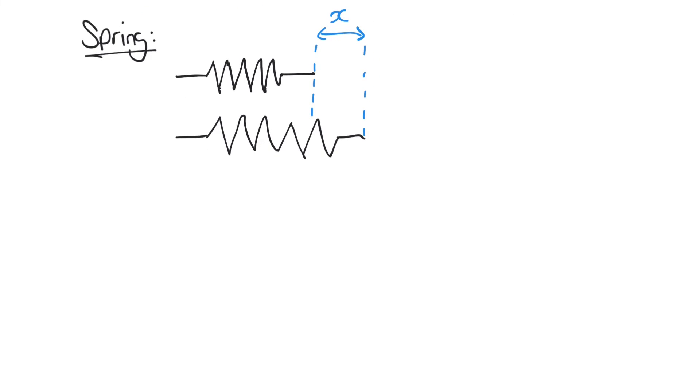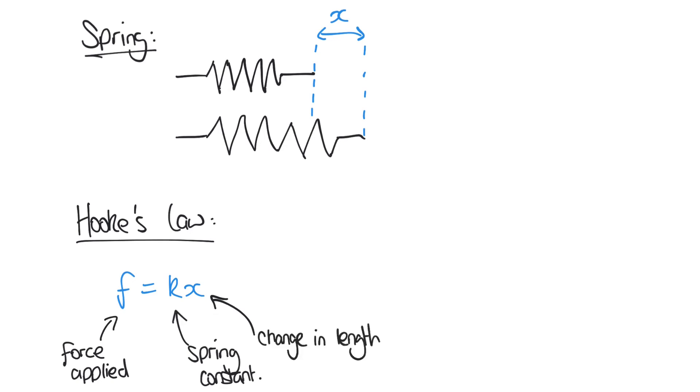So the spring equation looks something like this. It's something called Hooke's Law, and you might have come across this equation before. So F equals Kx, where F is the force applied, K is the spring constant. It's kind of a measure of the stiffness of the spring, and x is the change in length of the spring.